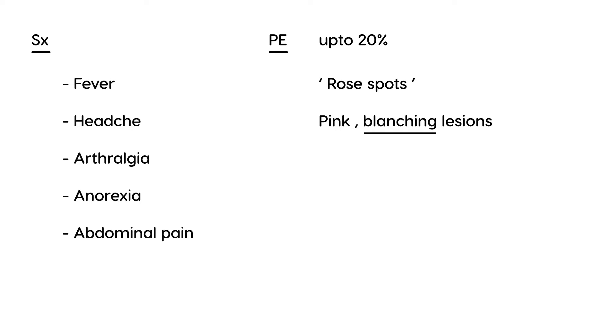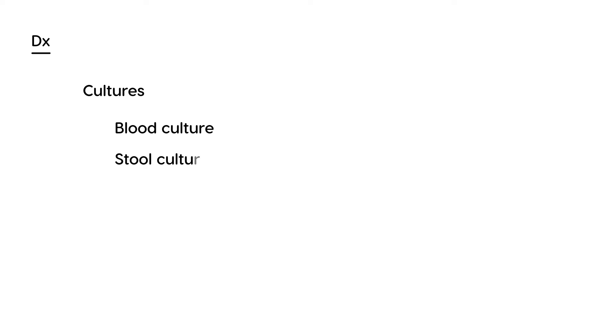Another characteristic finding that can help you reach a conclusion is an enlarged spleen — splenomegaly. Diagnosis involves cultures: blood culture, stool culture, and urine culture, which will help you identify the organism Salmonella typhi.